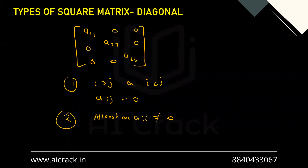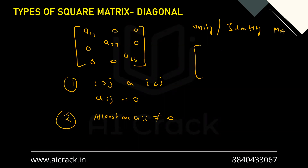A special case of the diagonal matrix is the unity or identity matrix, which looks like: 1, 0, 0 / 0, 1, 0 / 0, 0, 1. This is a very special case of the diagonal matrix.